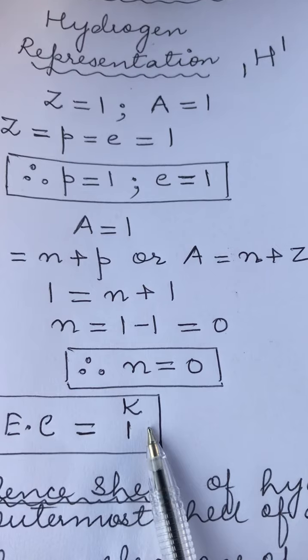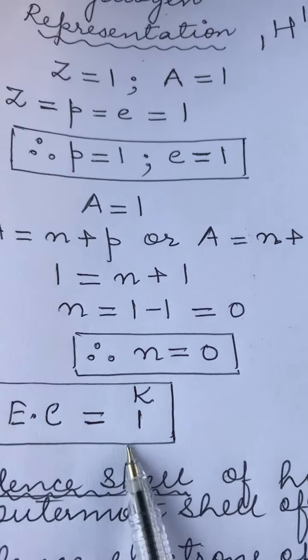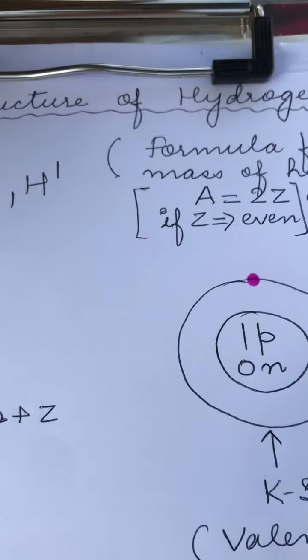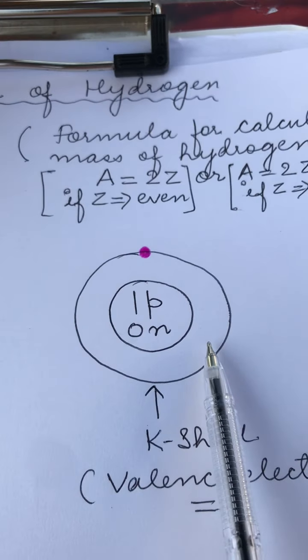Therefore, that one electron goes in the first shell, that is the K shell. So its electronic configuration is 1. Now we can easily draw the structure of the atom.